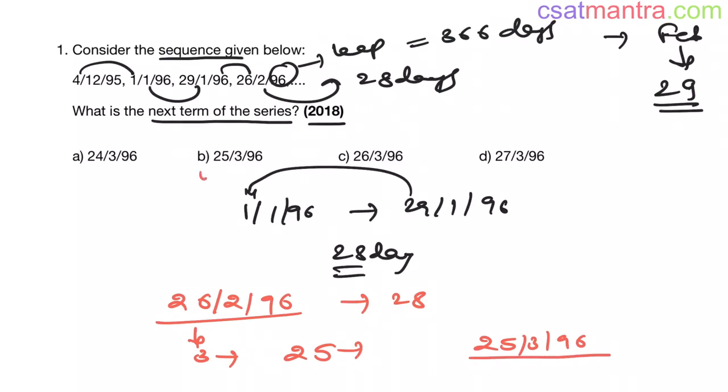So B is your answer friends. I hope all of you know how to find a leap year. Leap year comes once in four years my friends.